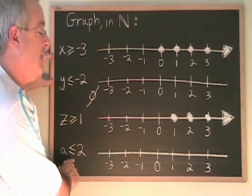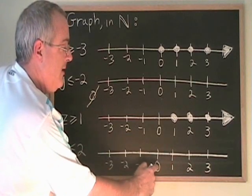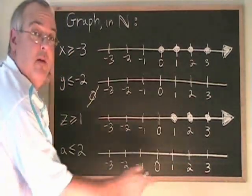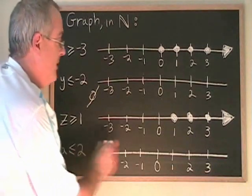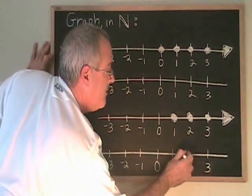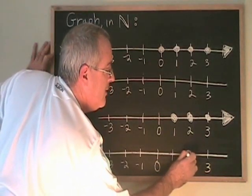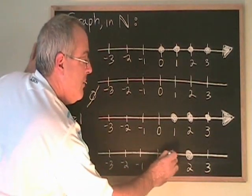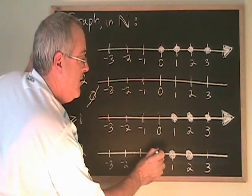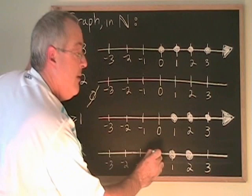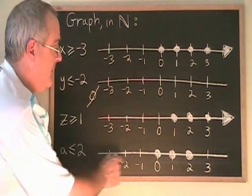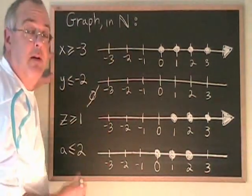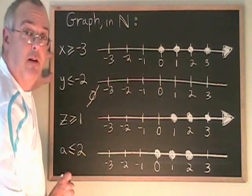a less than or equal to 2. These numbers here are all less than 2, and 2 is equal to 2, so that's going to be our answer. We put 2 first because it is equal to 2. Then 1 is less than 2, so we put a dot. 0 is less than 2, we put a dot. But then we have to stop because these other numbers are negative — they are not natural numbers, so they are not part of the answer to this particular question.